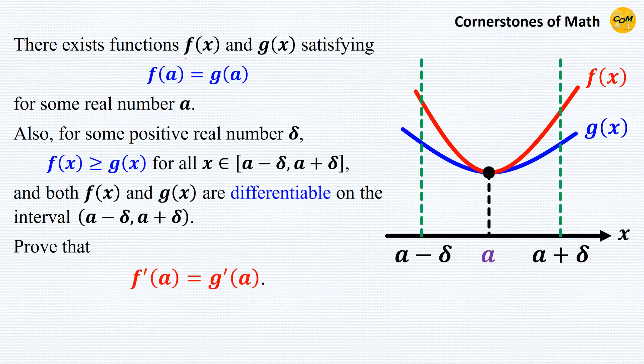There exist two functions f(x) and g(x) satisfying f(a) equals g(a) for some real number a. Also, for some positive real number delta, f(x) is greater than or equal to g(x) for all x on the closed interval [a - delta, a + delta], and both f(x) and g(x) are differentiable on the open interval (a - delta, a + delta).